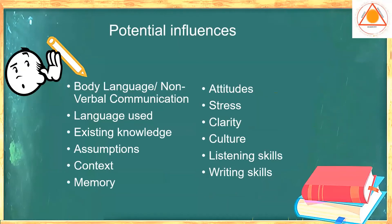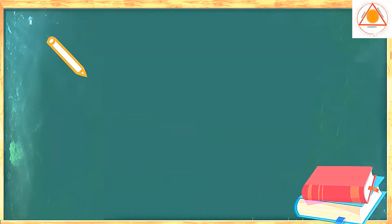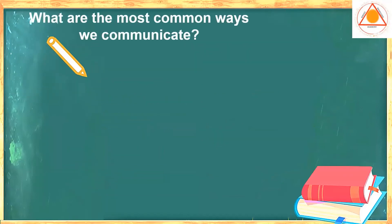We will look at those factors in barriers to communication. We have to understand that whatever message we try to deliver, there is a chance that the person may not be able to get the message entirely the way you want to communicate. So what are those influences? It can be body language, nonverbal communication, language, existing knowledge, assumptions, context, memory, attitude, stress, clarity, cultural factors, and listening and writing skills. These are barriers to communication, but we will talk about it later.